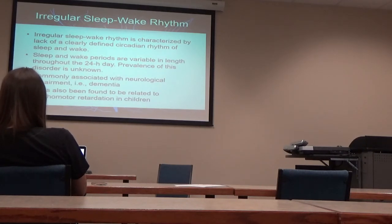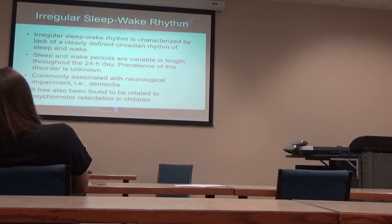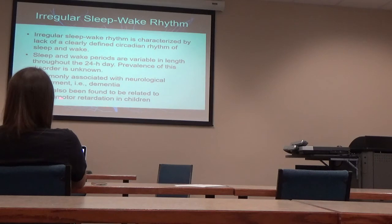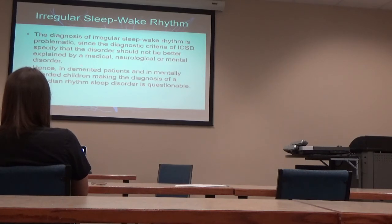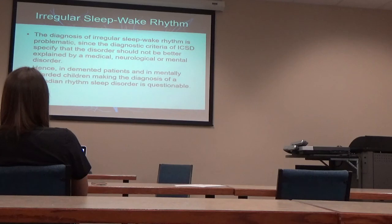Irregular sleep-wake pattern is a lack of clearly defined circadian rhythm of sleep and wake. Prevalence is really unknown because it's not common. It's associated with neurocognitive impairment and children with genetic propensity for cognitive impairment. The diagnostic criteria state it should not be better explained by a medical, neurological, or mental disorder — yet the only time you ever see it is in a medical, neurological, or mental disorder. There are some things in medicine that are contradictory in their own diagnostic criteria.